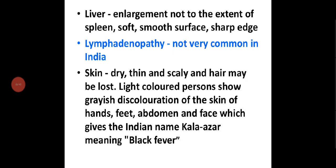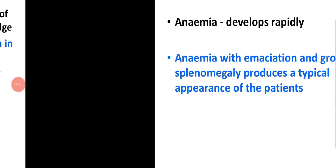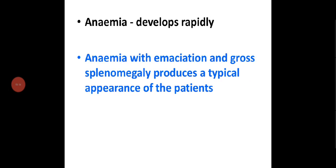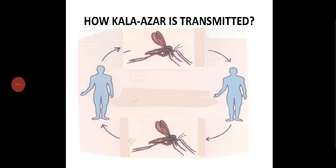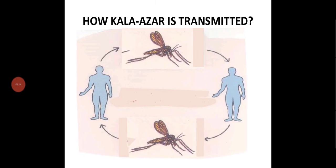This grayish discoloration gives the disease its Indian name Kalazar, meaning 'black fever.' Anemia develops rapidly, and with emaciation and gross splenomegaly, it produces a typical appearance of the patient — splenomegaly and anemia are the hallmark features.